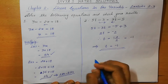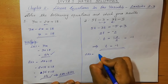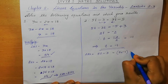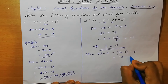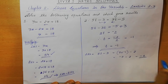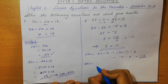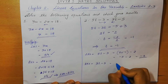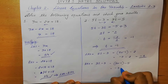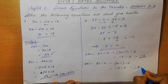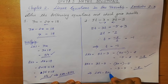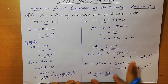Next we verify our answer. LHS = 5t minus 3 = 5 × (minus 1) minus 3 = minus 5 minus 3 = minus 8. RHS = 3t minus 5 = 3 × (minus 1) minus 5 = minus 3 minus 5 = minus 8. From here it is clear that LHS equals RHS, so our answer is correct.